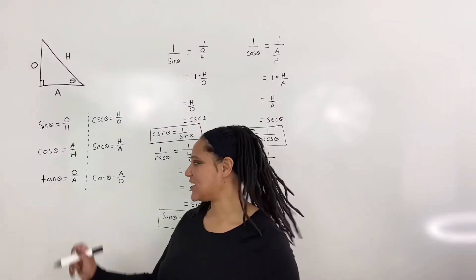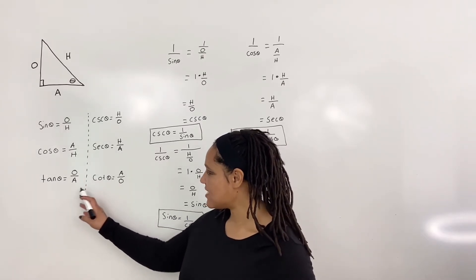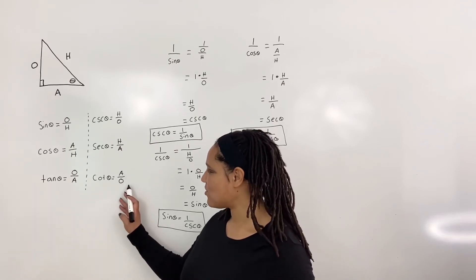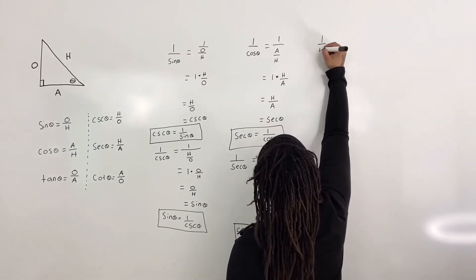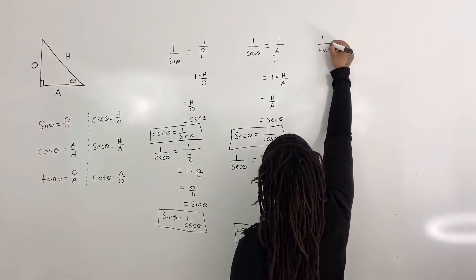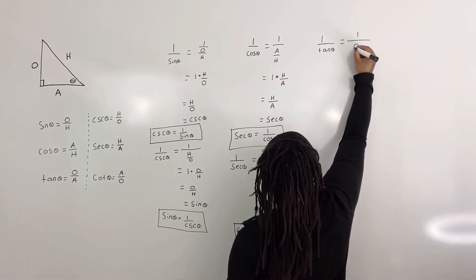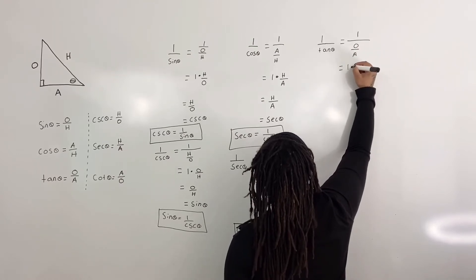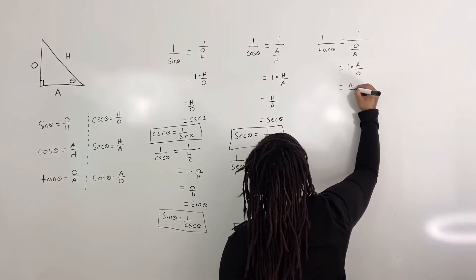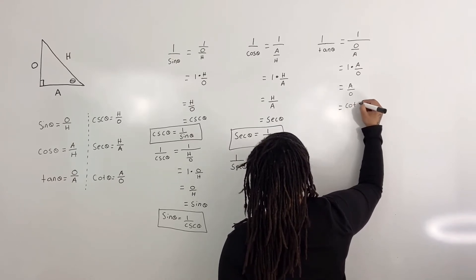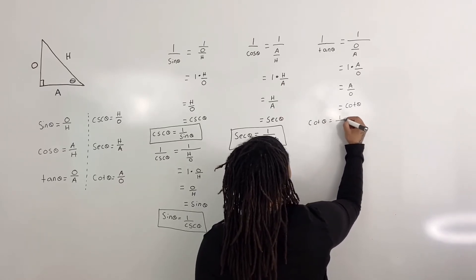For the last reciprocal, we will look at tangent of theta and cotangent of theta. Tangent of theta is opposite over adjacent and cotangent of theta is adjacent over opposite. So 1 over tan of theta is equal to 1 over opposite over adjacent, which is equal to 1 times adjacent over opposite, which is equal to adjacent over opposite, which is equal to cotangent of theta. So cotangent of theta is equal to 1 over tan of theta.